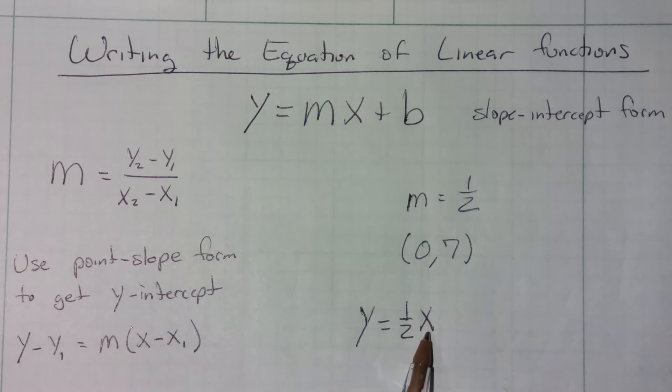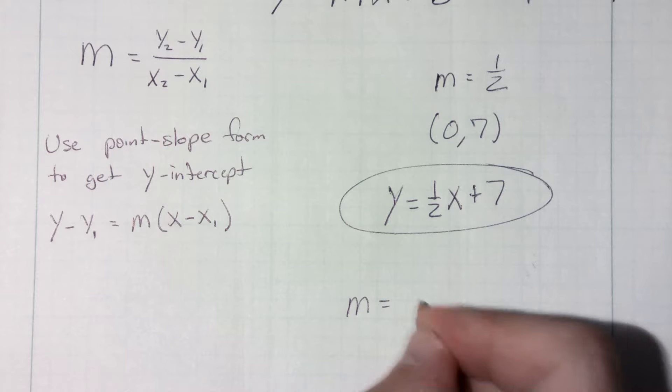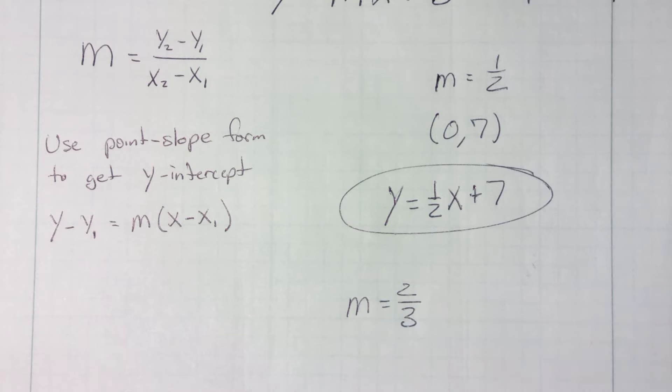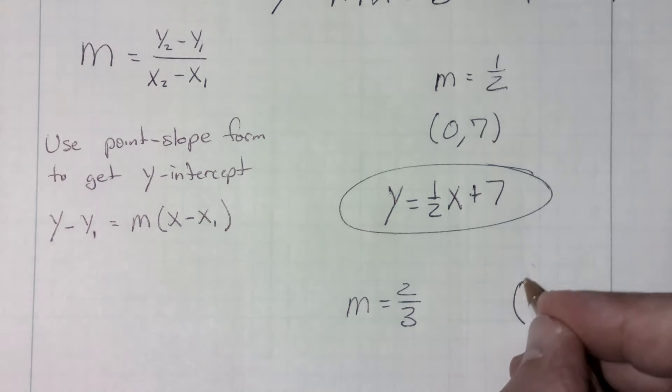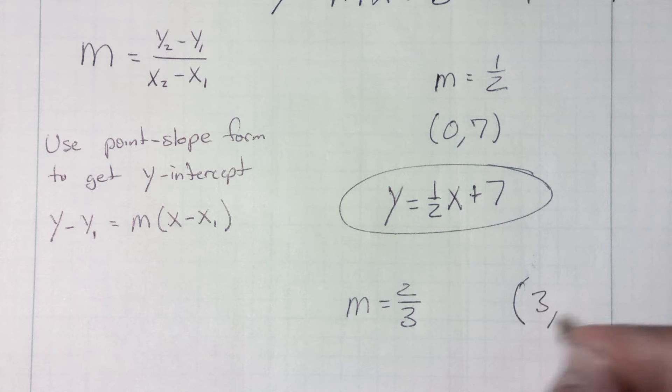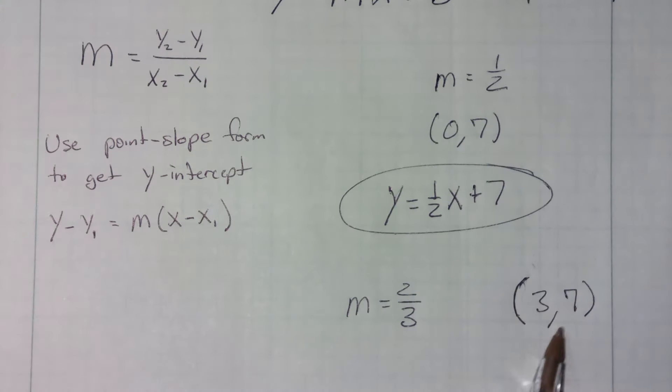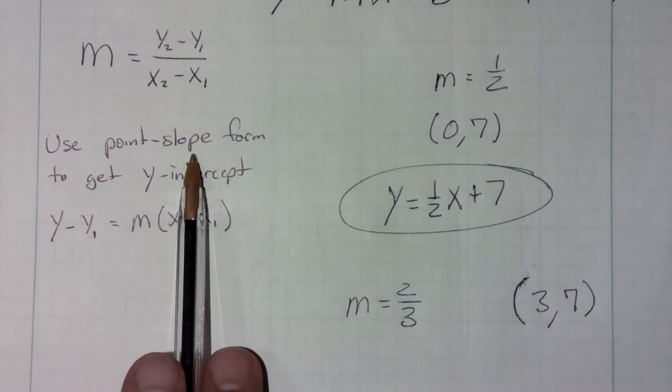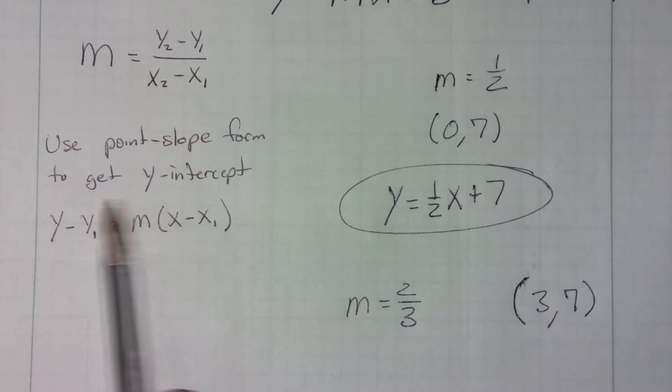It's that simple if they give you the slope and the y-intercept, but that might not always be the case. Sometimes they might just give you the slope. Let's say the slope is two-thirds this time, and they give you a different point that is not a y-intercept. So let's say they go through the point 3, 7. Well, if they give you a different point that's not a y-intercept and the slope, what you're going to do is you're going to use the point-slope form to get to the y-intercept.